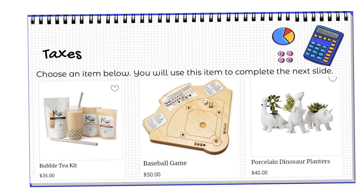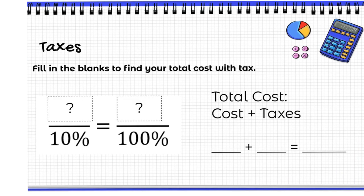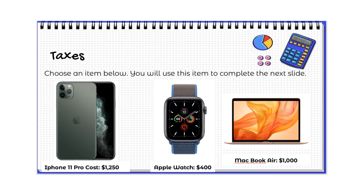This problem is yours now. You are going to pick one of these items and find how much it costs with taxes. Fill in the blanks here — this would be your cost of the item. Remember that the cost is 100% of the cost, and you're trying to find 10% of that cost. Then you're going to add your cost plus the taxes to get your total. Now choose one of the Apple devices you're going to buy and find out how much you'll pay with taxes. Remember, you can use a calculator.